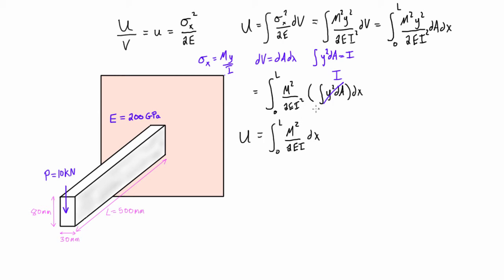So maybe let's do moment of inertia first. We have I is just going to be equal to one-twelfth base height cubed. So if we just throw all that in, we're going to get 1.28 times 10 to the negative 6 meters to the fourth.